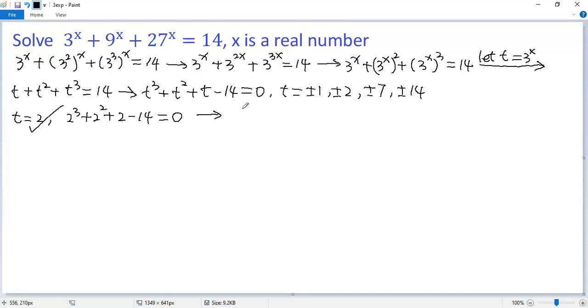That means t minus 2 is a factor of the left side. Based on this fact, we can rewrite the left side as follows: t cubed, but we change t squared as negative 2t squared plus 3t squared, and t as negative 6t plus 7t, finally minus 14 equals 0.